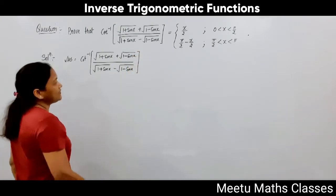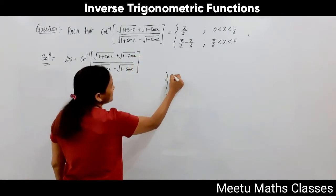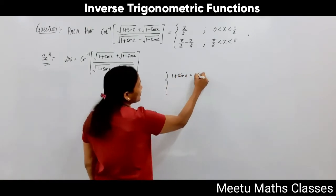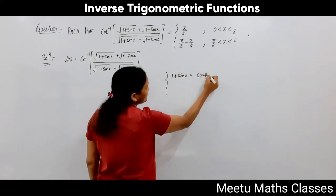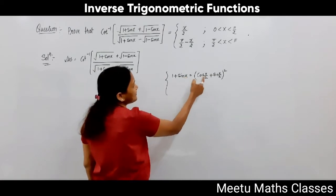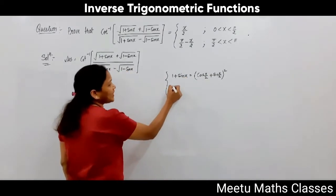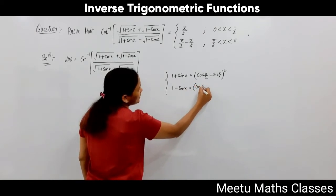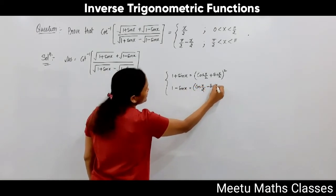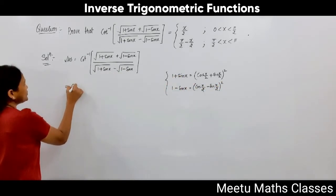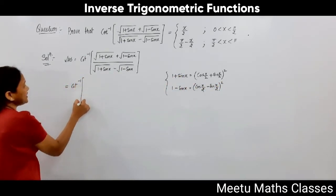Now we are going to apply two formulas — these are called half-angle formulas because the angle is halved. 1+sinx can be written as (cos(x/2) + sin(x/2))², and 1-sinx equals (cos(x/2) - sin(x/2))². Now by substituting these two formulas here.